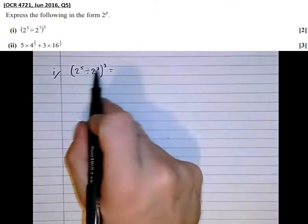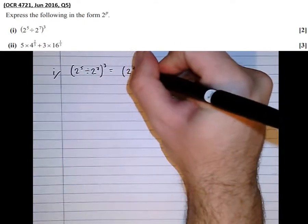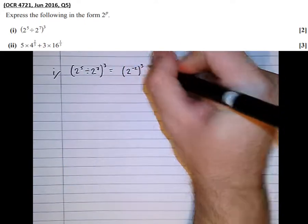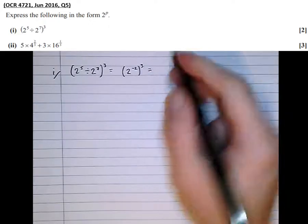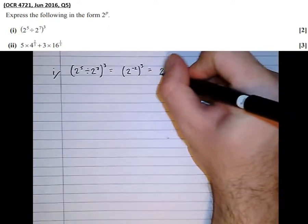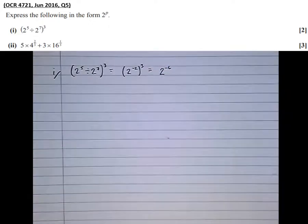When we subtract the powers we get 2 to the minus 2, cubed, which is multiplying the powers together, 2 to the power of minus 6. So relatively straightforward with that one.